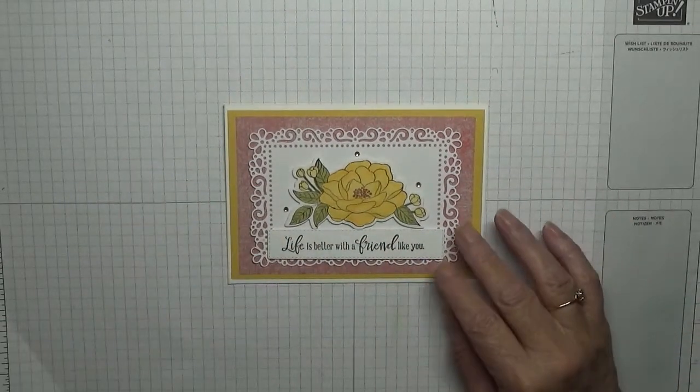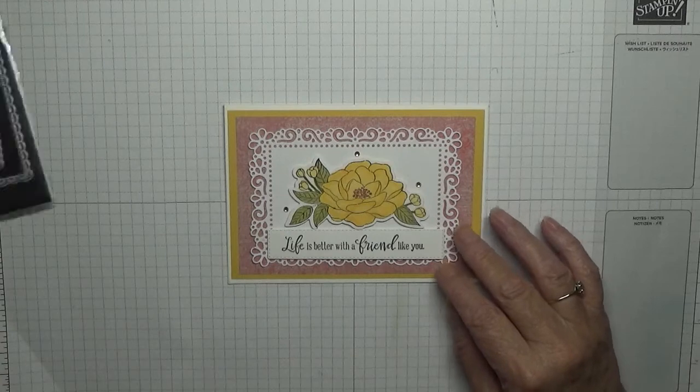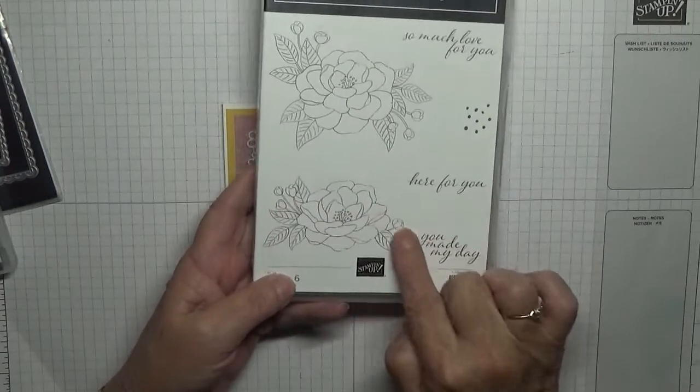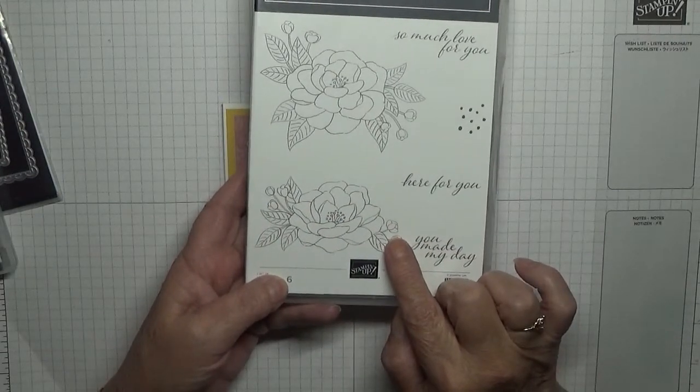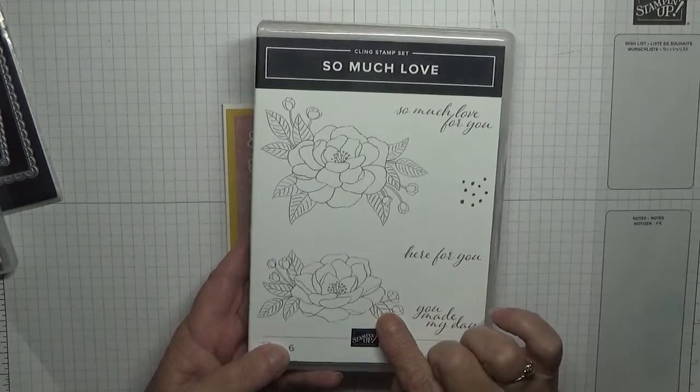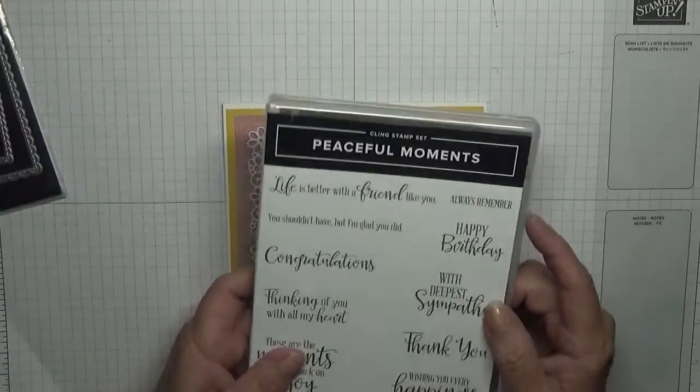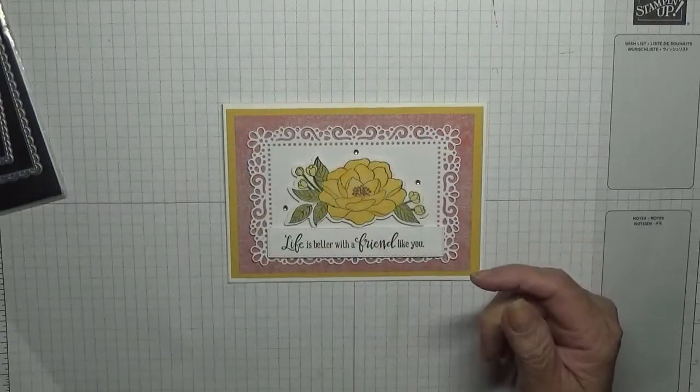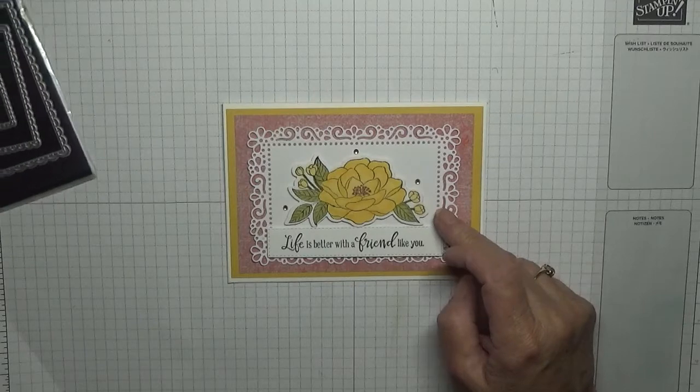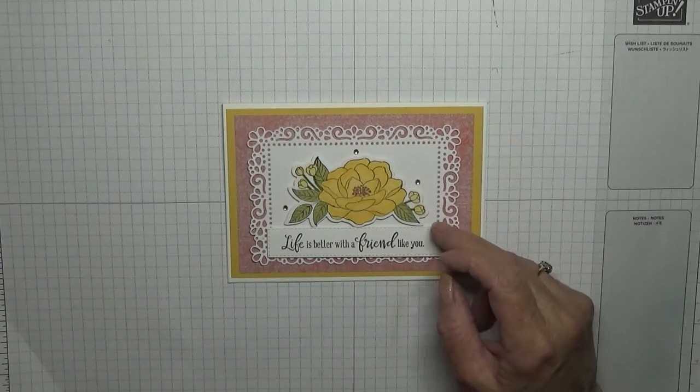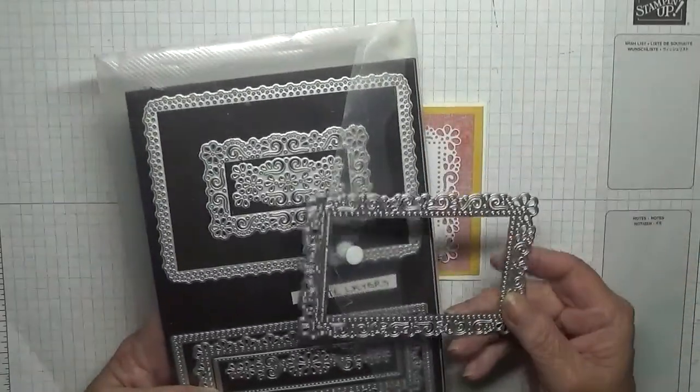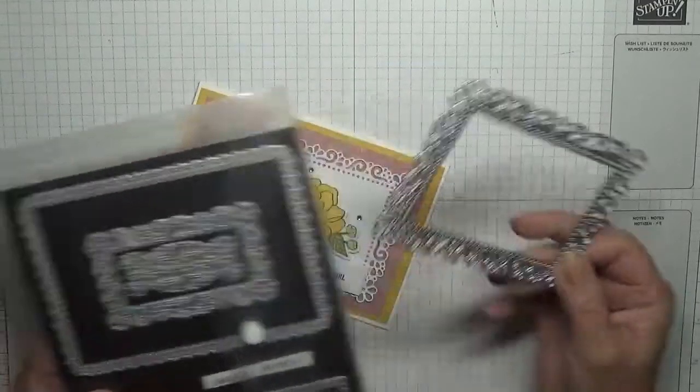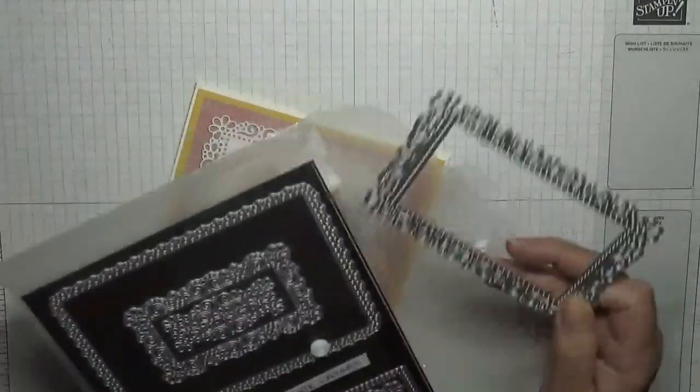So to make this card I am using So Much Love, and I'm going to be using the smaller flower. I'm using the sentiment from Peaceful Moments: life is better with a friend like you. I've also used the Ornate Layer dies, and I'm using the second rectangle die which I've already cut out.